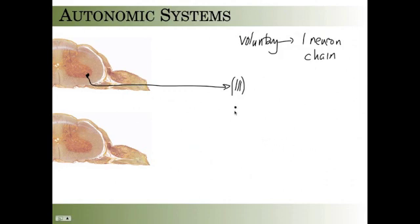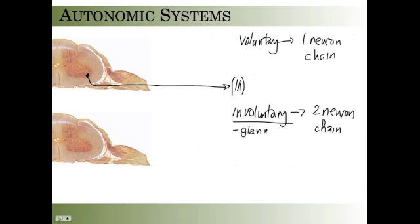The involuntary systems, which are also known as the autonomic systems, have a two neuron chain. This involuntary system innervates glands, innervates organs, and innervates involuntary or smooth muscle. The first neuron lives in the central nervous system, usually a little more dorsally.